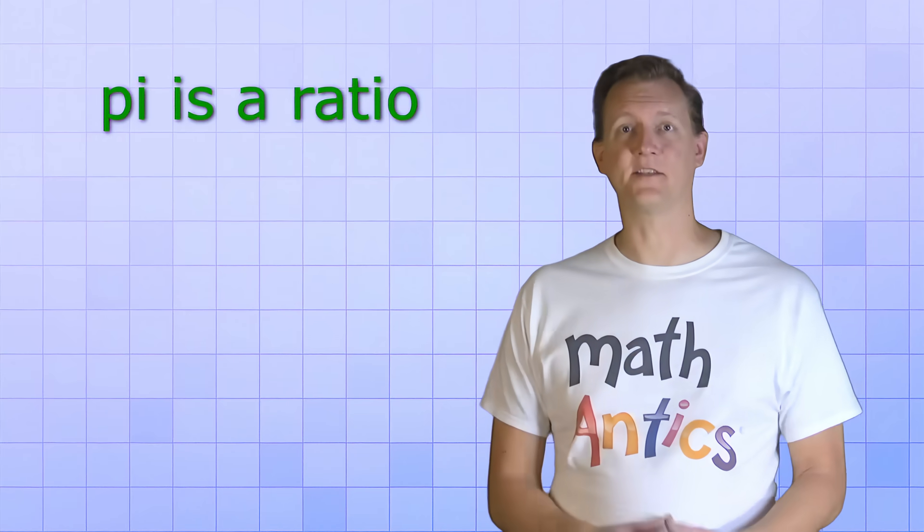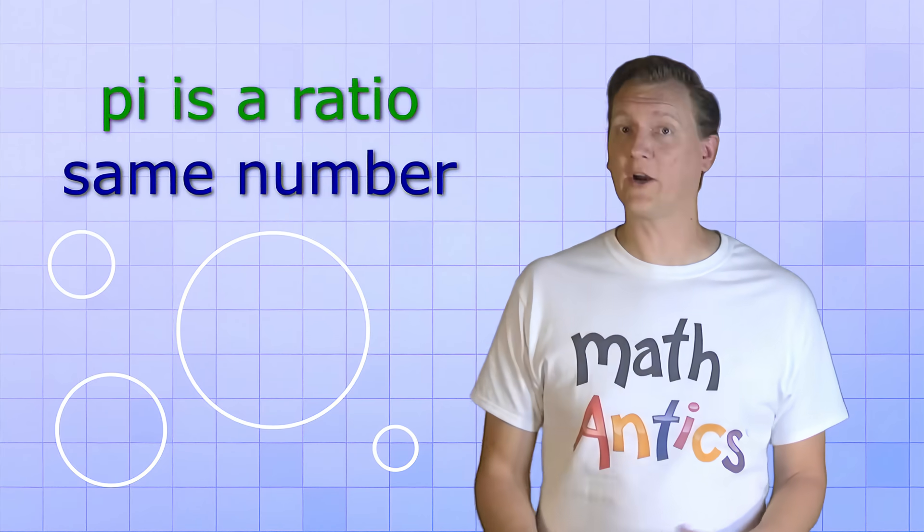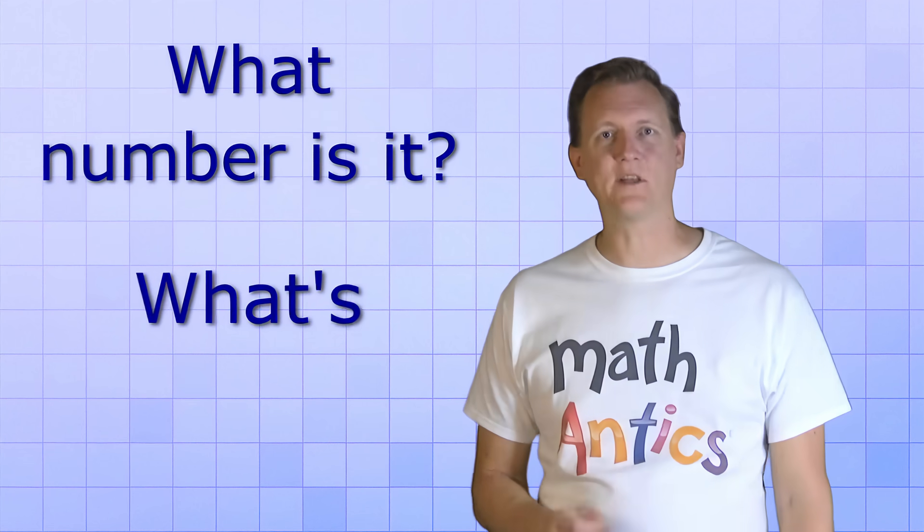And as you'll see in a minute, because Pi is a ratio, it's the same number for any circle, no matter how big or small. Ok, but what number is it? What's the value of Pi? Well, to figure that out, have a look at these two circles, one big and one small.